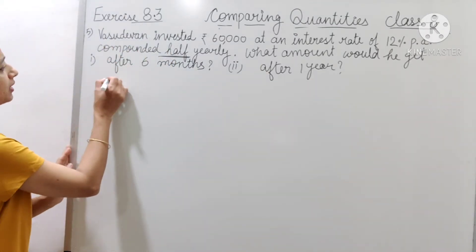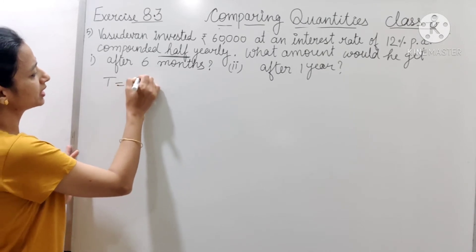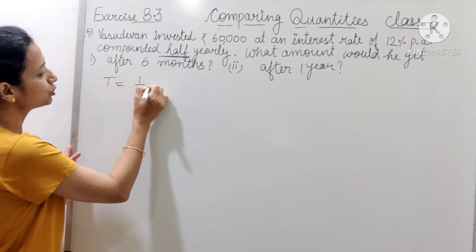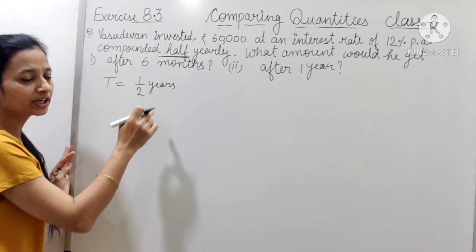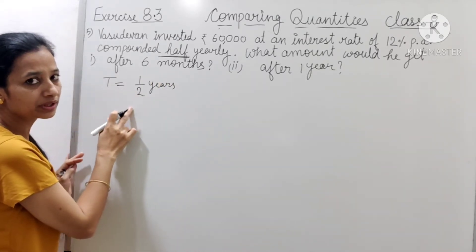First, hume jab 6 month diya hai, toh yaha pa t kitna hua jayega hamaara? 1 by 2 year. 6 ko divide karenge 12 se, toh matlab kitna a gaya hamaara? 1 by 2 year.